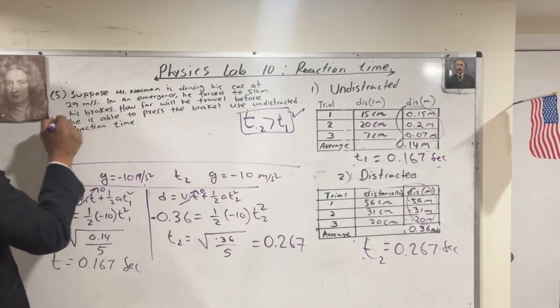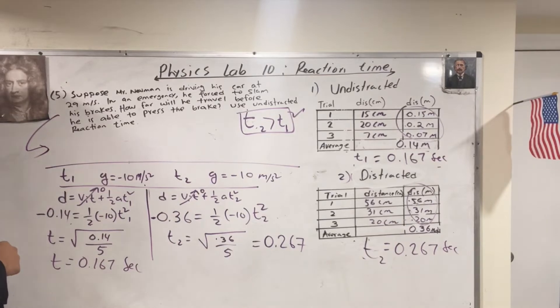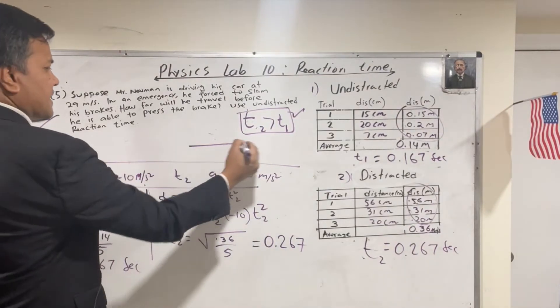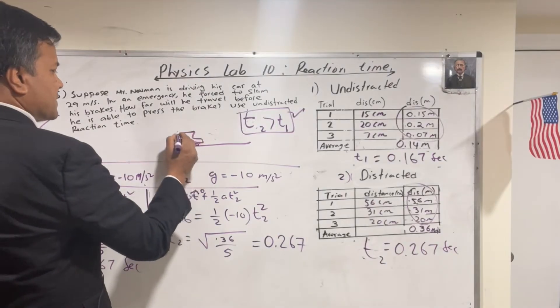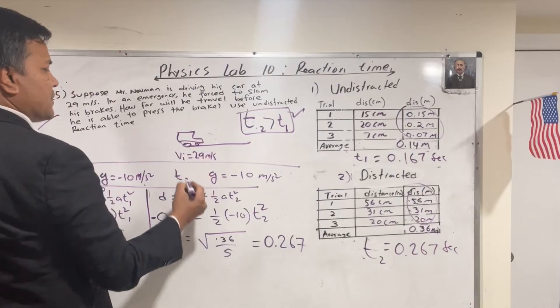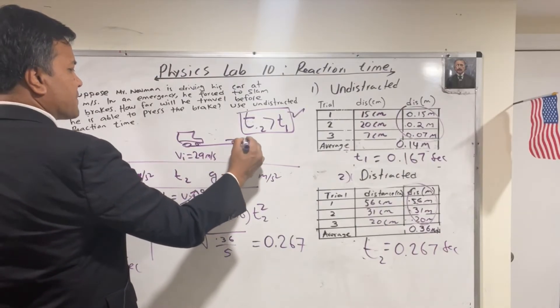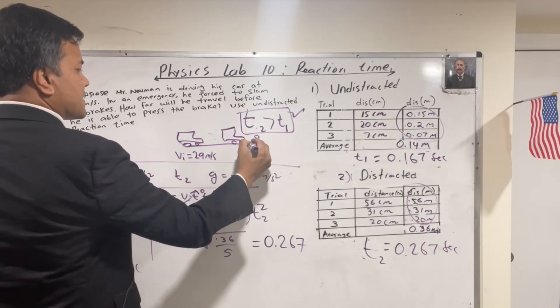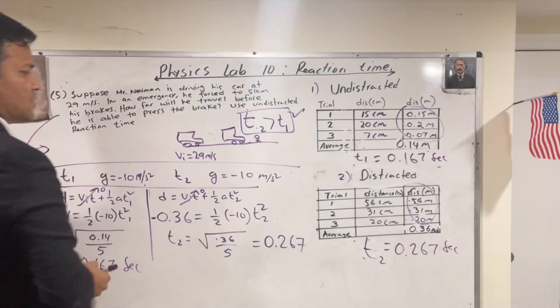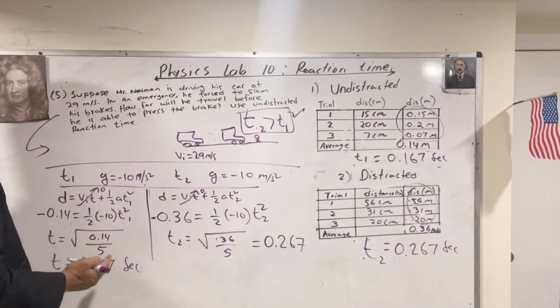Now, we're going to finish this problem. Now, let's draw the scenario over here. The person's initial velocity is 29 meters per second with constant velocity. And as soon as the person sees someone crossing the road, he slammed the brake.